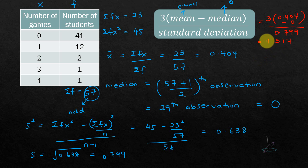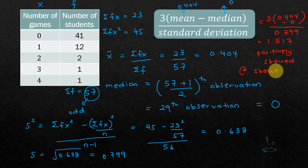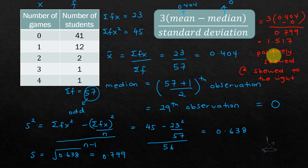Substituting into the formula: SK = 3(0.404 − 0) / 0.799 = 1.517. Since the value is positive, the distribution is positively skewed, or skewed to the right.